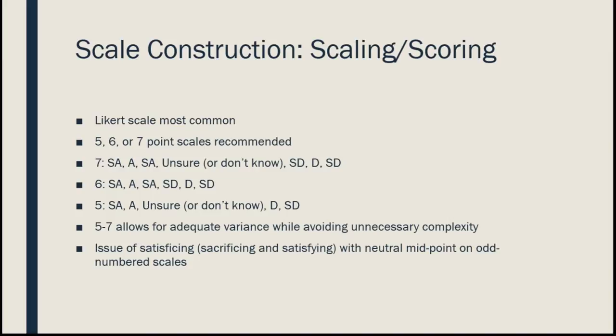A seven-point Likert scale would include: strongly agree, agree, slightly agree, unsure or don't know, slightly disagree, disagree, and strongly disagree. For a six-point scale, we remove the middle 'unsure' option. For a five-point scale, we just have: strongly agree, agree, unsure, disagree, strongly disagree. The general consensus is that five to seven points gives us enough variance for statistical procedures without being overly complex. More than seven points — like fifteen — becomes too difficult for people to differentiate in their minds.